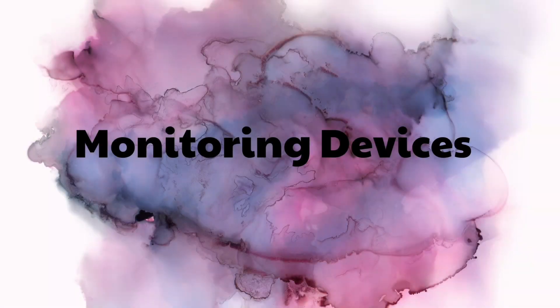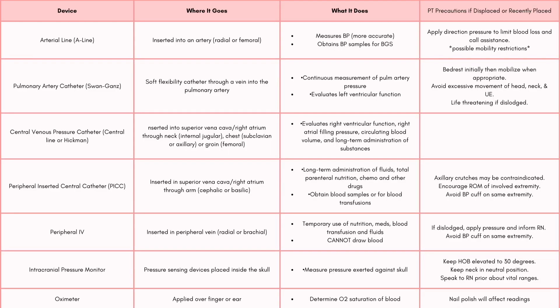Next we're going to be going over different types of monitoring devices. This chart is very large and I'm only going to go over the devices and PT precautions, but please feel free to pause, read it, take a screenshot, or make your own chart. First we have the A-line, or art line. PT precautions: if you pull it out, apply direct pressure to limit blood loss and call for assistance. There is a lot of blood if pulled out, so talk to your nurse beforehand because they might have mobility restrictions.